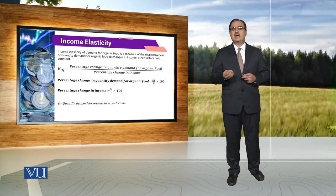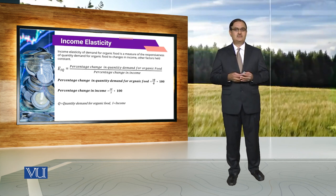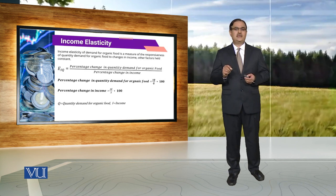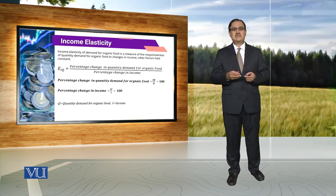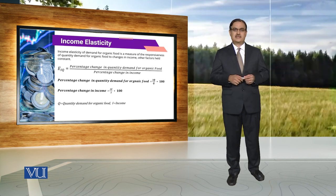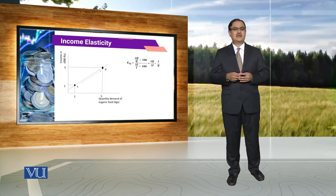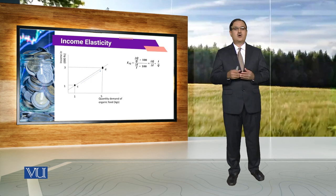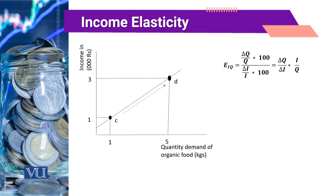Again, delta I denotes the change in income between two points, while the income in the denominator is the point of reference against which we compute the percentage change in income. For the diagram, we have quantity demanded for organic food on the horizontal axis and income on the vertical axis.